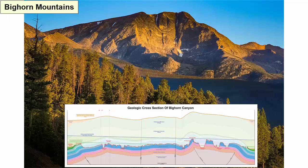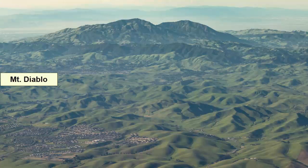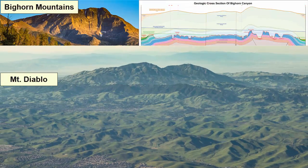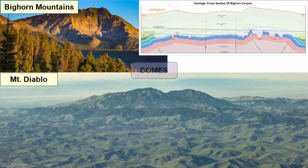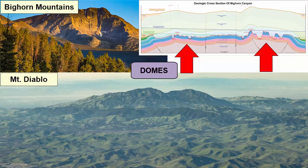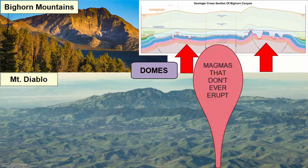The Bighorn Mountains in Wyoming and Mount Diablo in the San Francisco Bay Area. What kind of mountains are these? Domes. When less dense material buried underground rises upward with a buoyant force, it pushes the rocks above it into a dome. Examples of less dense material rising upward include lower density molten rock under volcanic centers, but normally those lead to volcanic mountains. If the molten rock pushes up and never makes it out, it might lead to the formation of a dome.